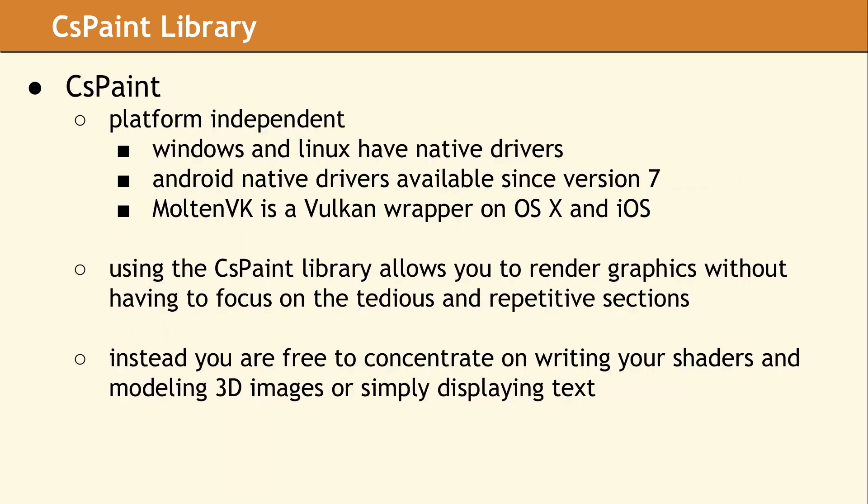The cspaint library is platform-independent; however, the Vulkan API is only available natively on Windows, Linux, and recent versions of Android. Using the MoltenVK wrapper makes the Vulkan API available on OS X and iOS, so Vulkan is really usable on all major desktop and mobile computing platforms. The higher level of abstraction which cspaint provides allows your applications to render graphics without needing so many of the tedious and repetitive low-level tasks required by Vulkan.